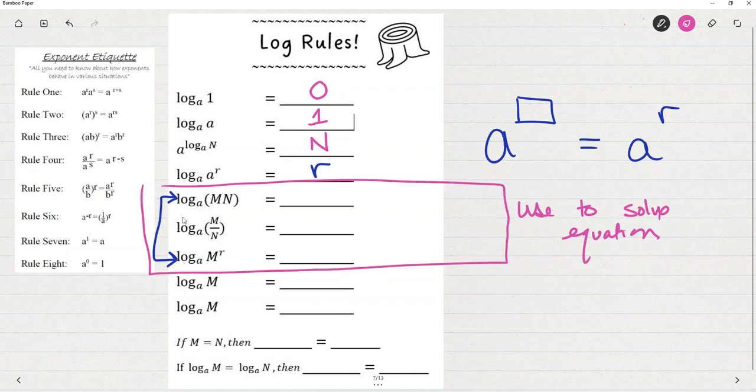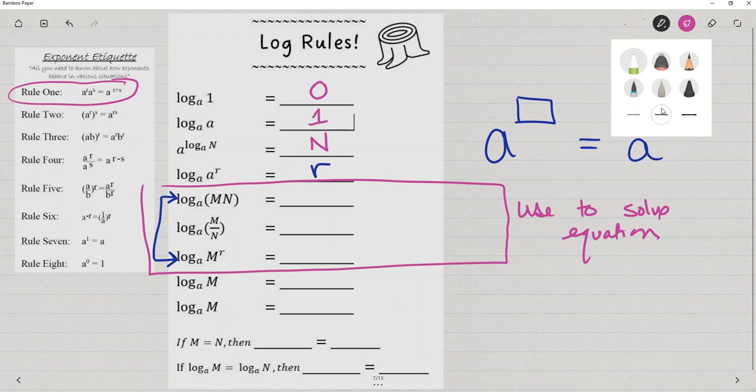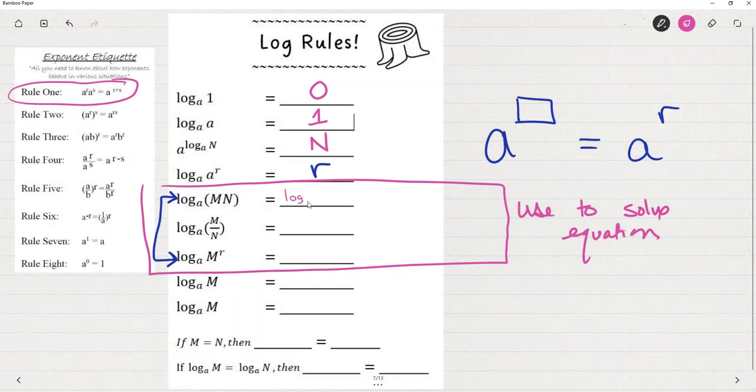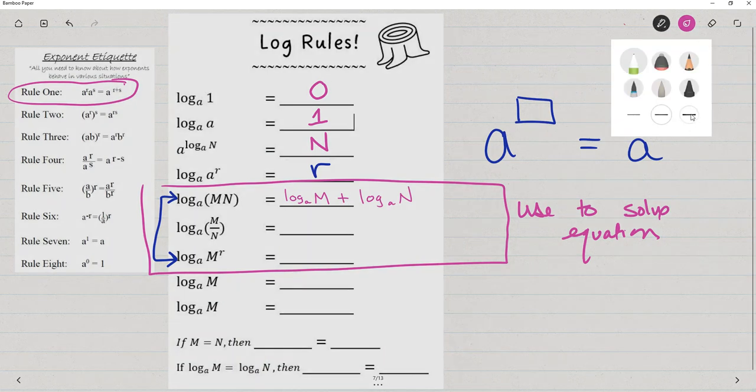These next three, we will use to solve equations when we have an equation where we're trying to find the exponent. So make sure you pay extra close attention to these three. Here they are. Log base a of m times n relates to rule one. And you see that with exponents, when we multiplied two like bases, we added the exponents.